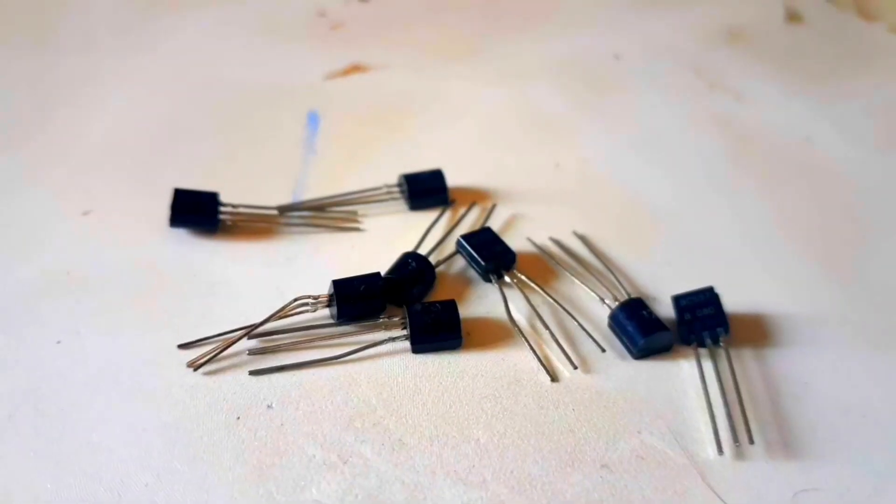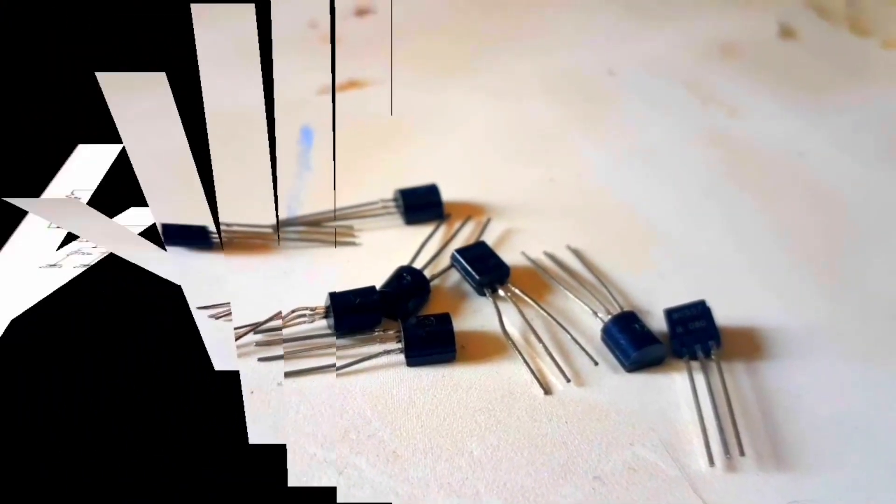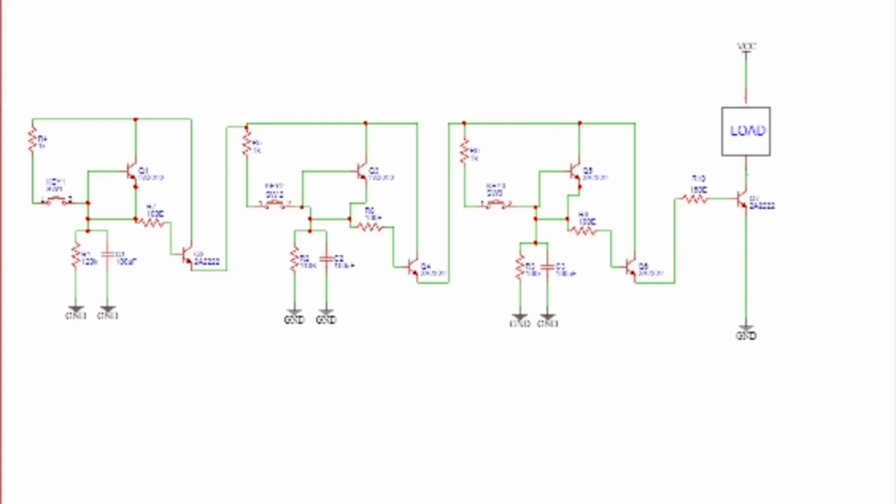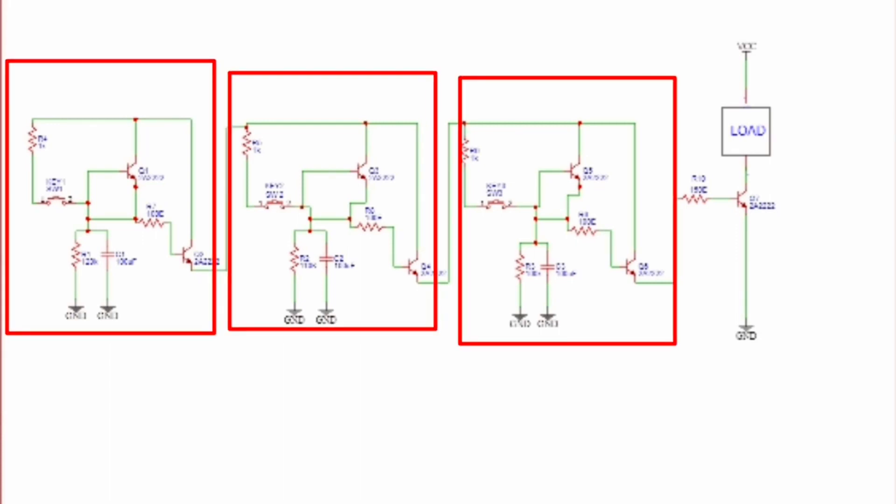To start with, we will need around 7 transistors to make a 3-digit locking system. Firstly we will divide it into 3 sections.